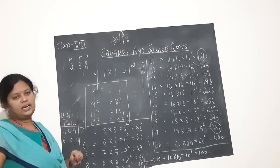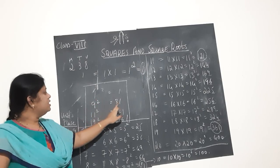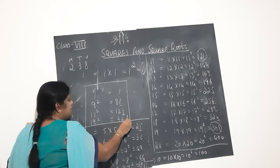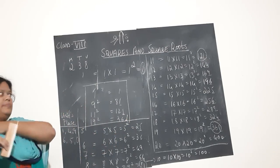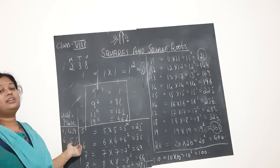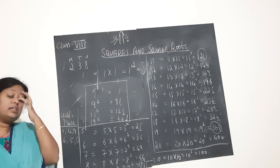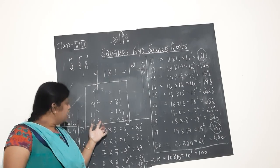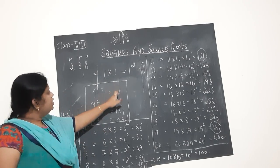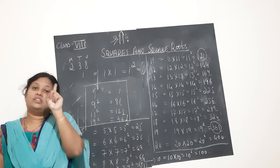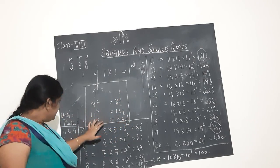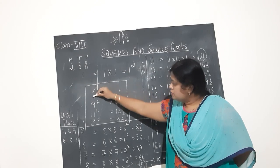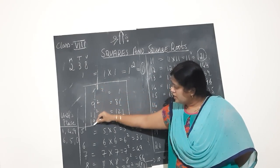1 squared is 1, 9 squared is 81 — 1 in the units place. Similarly, 11 squared is 121 — 1 in the units place. 19 squared is 361 — 1 in the units place. The numbers 1, 9, 11, and 19 each have either 1 or 9 in their units place.